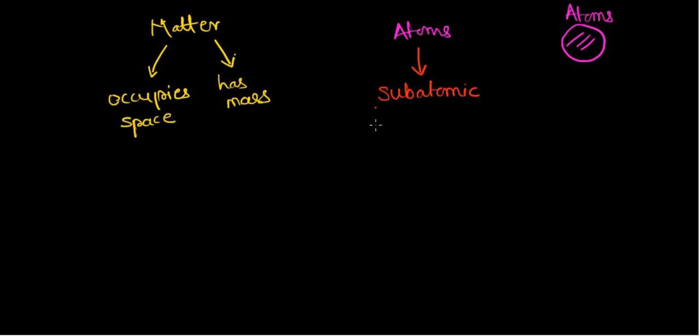The subatomic particles are mainly three types: protons, electrons, and neutrons. You can split the atom into these three subatomic particles. When two or more atoms combine together,